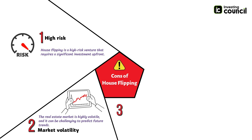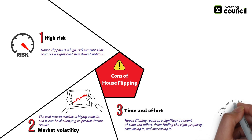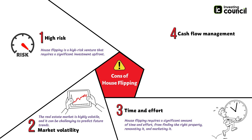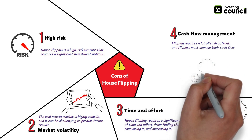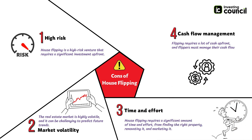The third disadvantage is time and effort — house flipping requires a significant amount of time and effort, from finding the right property to renovating and marketing it. Flippers need to be hands-on and have the necessary skills and knowledge to manage the process effectively. The fourth disadvantage is cash flow management: flipping requires a lot of cash upfront, and flippers must manage their cash flow effectively to cover property purchase, renovation costs, and holding costs until the property sells.